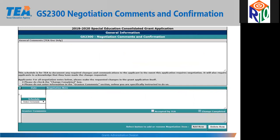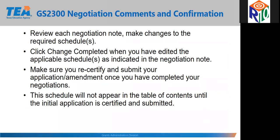After certifying and submitting the special education consolidated grant application, or submitting an amendment to the grant, the LEA should check the GS 2300 negotiation comments and confirmation schedule. This is used by TEA if they need additional information, clarification, or have questions. Once the LEA has made the required changes in their grant, the change completed box can be checked. Grantee comments and the accepted by TEA box are for TEA's use only. Make sure you recertify and submit your application amendment once you have completed your negotiations, and the schedule will not appear in the table of contents until the initial application is certified and submitted.